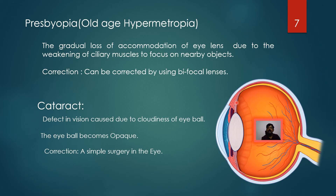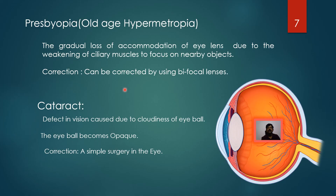Presbyopia can be corrected by using bifocal lenses — sometimes we use concave, convex, or both lenses. In the case of a normal person, the ciliary muscles are very strong and can adjust the thickness of the eye lens according to the distance of the object. Once the ciliary muscles lose their ability to change the thickness of the eye lens, presbyopia is caused. It is corrected using bifocal lenses; nowadays, progressive lenses are also used.